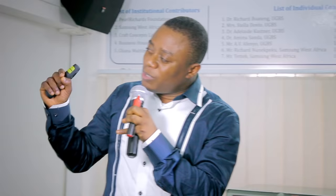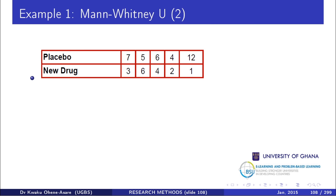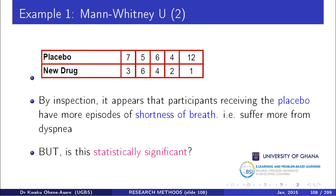The new drug is reducing asthma when the number of episodes comes down. You can see clearly that the new drug seems to show evidence of that. By inspection, participants receiving the placebo have more episodes of shortness of breath — they are suffering more from dyspnea — while those receiving the new drug are benefiting. But is the difference statistically significant, or is it due to chance?